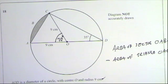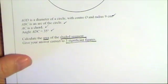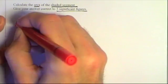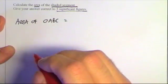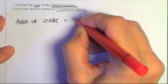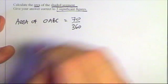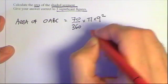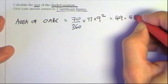I'll use that to first find the area of the sector, then the area of the triangle, and subtract them. Area of sector OABC: it has a central angle of 70 degrees, so it's 70 over 360 of the area of the whole circle — that's times π times 9 squared, because the radius is 9. That comes to 49.480.